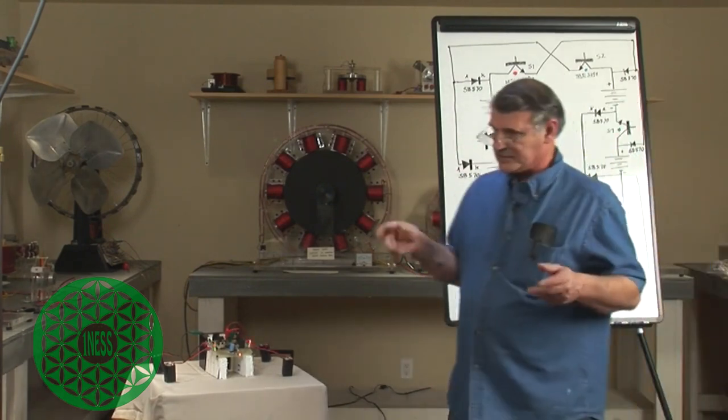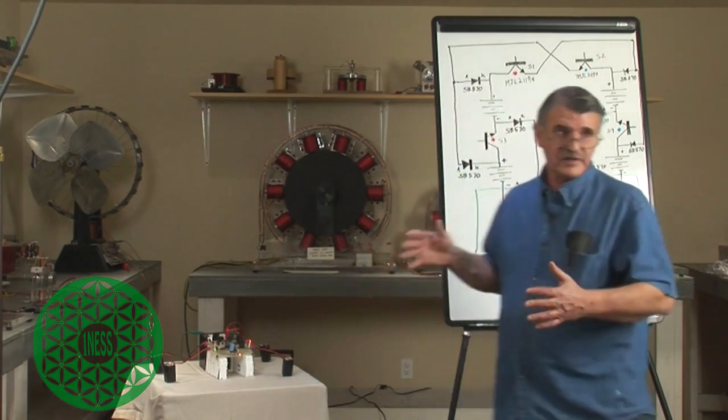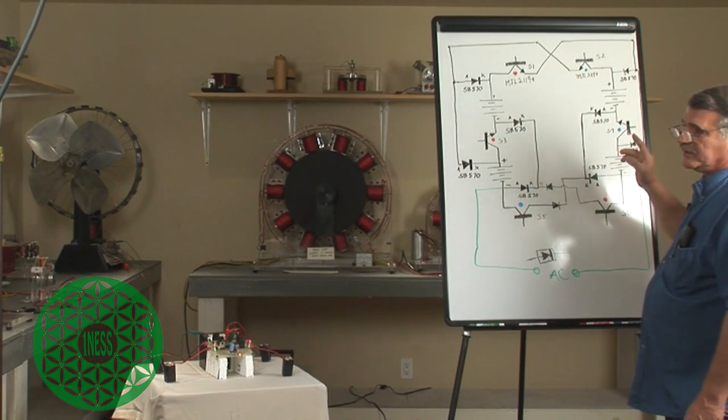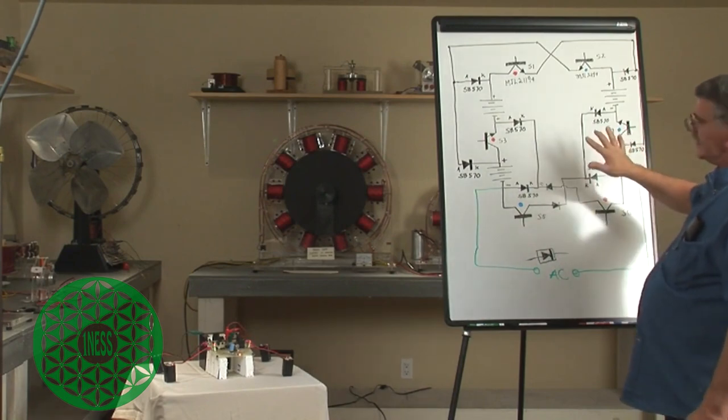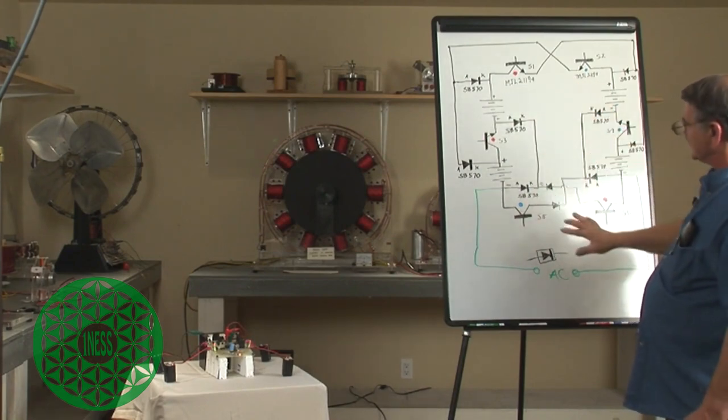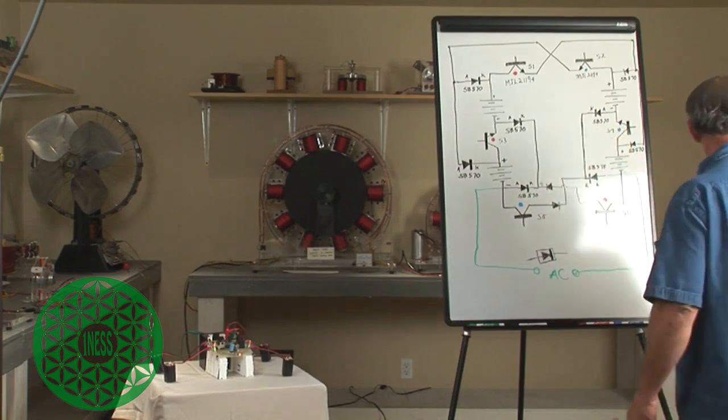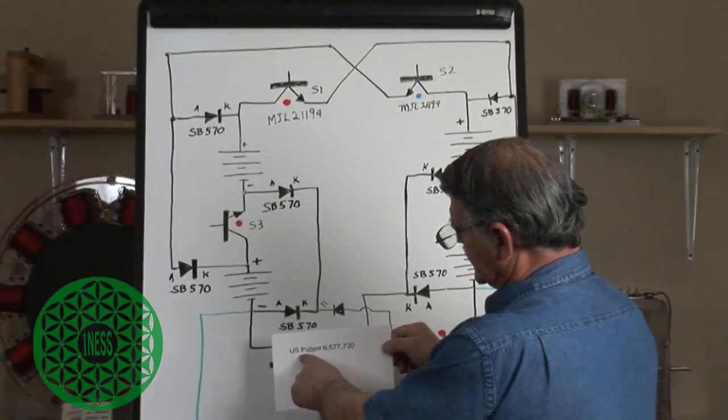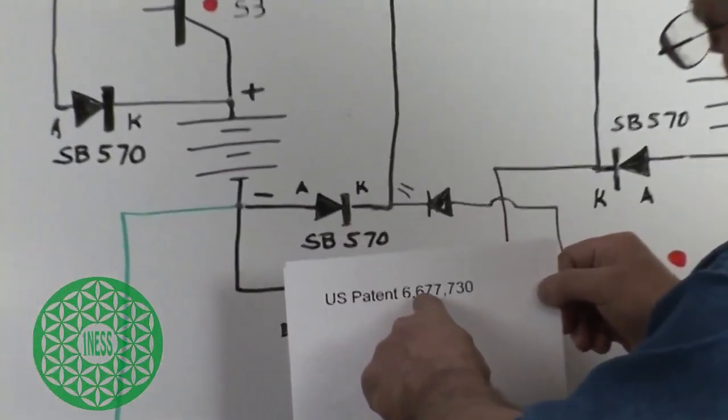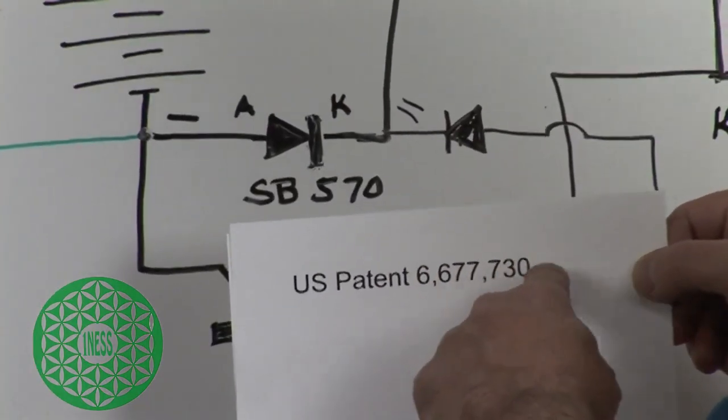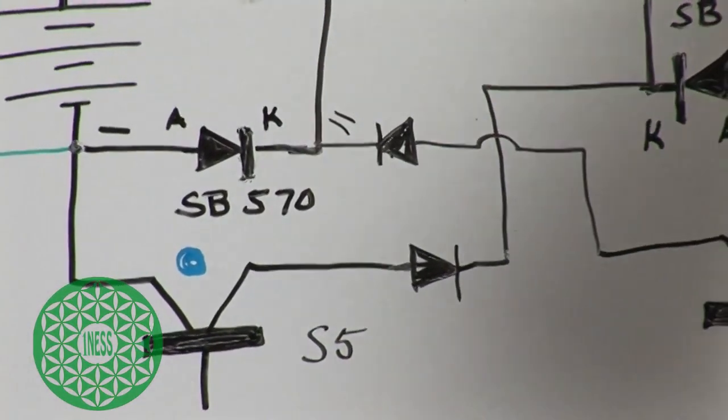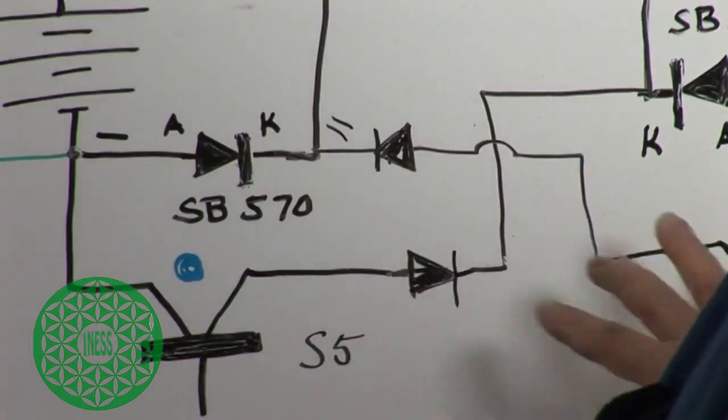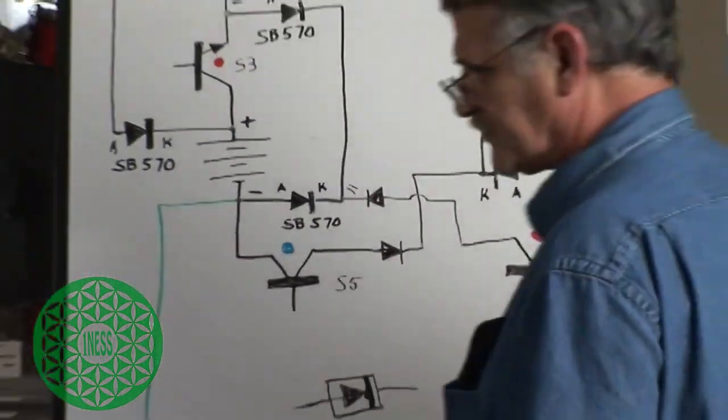I want to cover this so everybody understands that it has to be switched this way. You cannot switch it any other way. And even in the advancements of this circuit which are proprietary and protected under our patent number on the potential charger which is US patent 6677730, this is why we don't go into the advanced circuits. We're just going into the simple circuits.